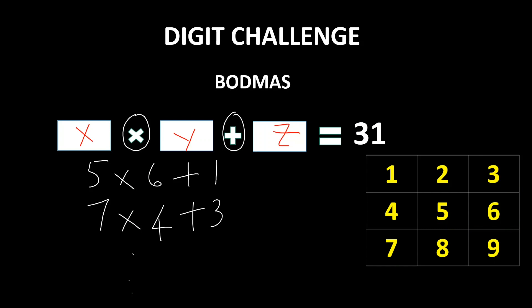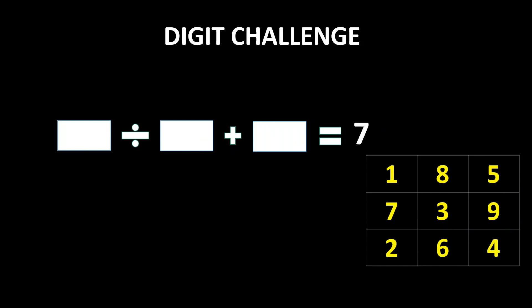This is the first level of digit challenge. This level may seem very similar to what was discussed earlier, except that the division operator is placed here instead of the multiplication operator. But have a look at the digital numerical pad given here — the numbers are jumbled.